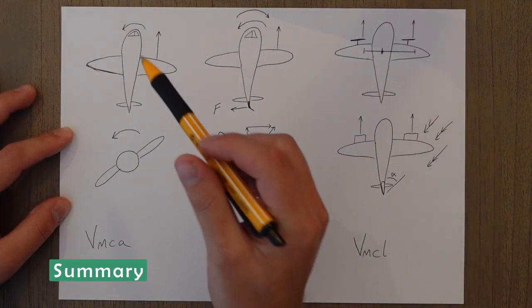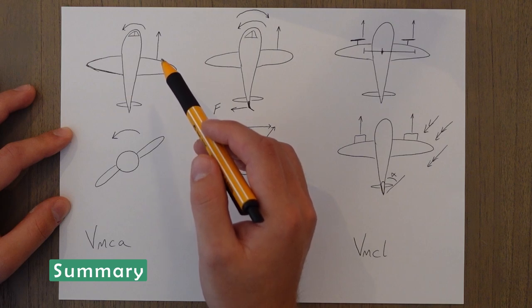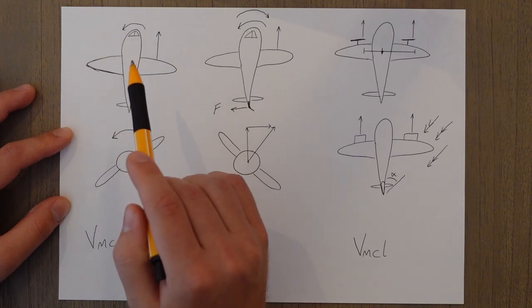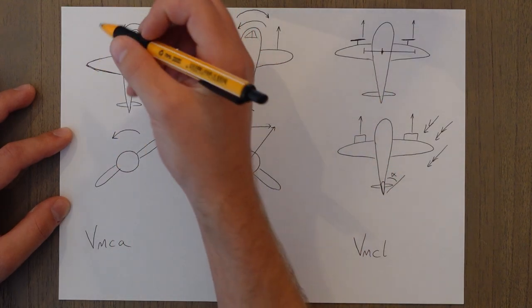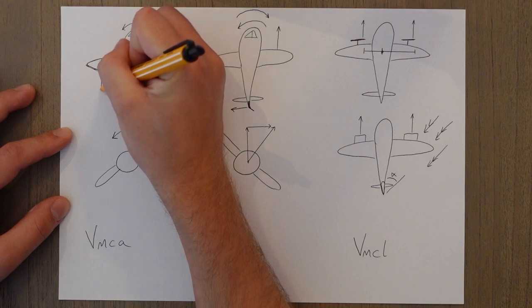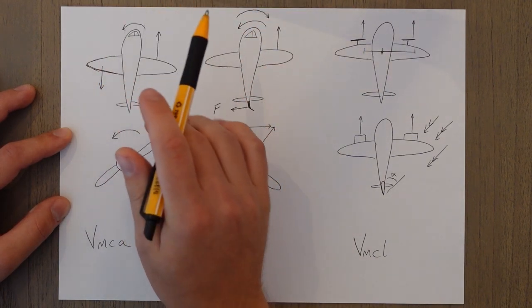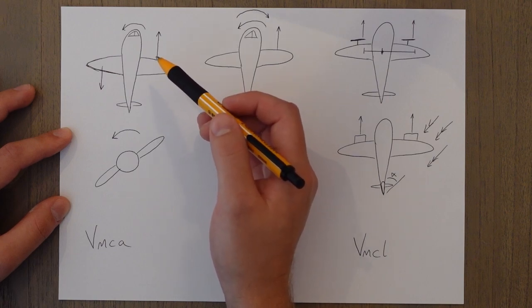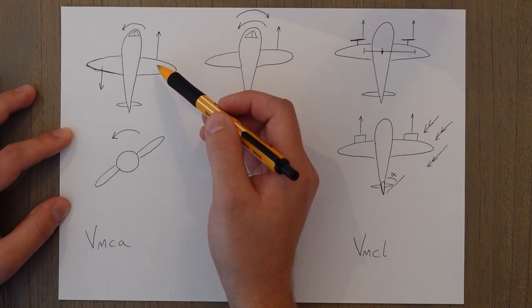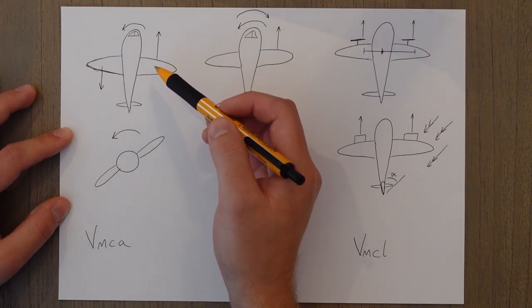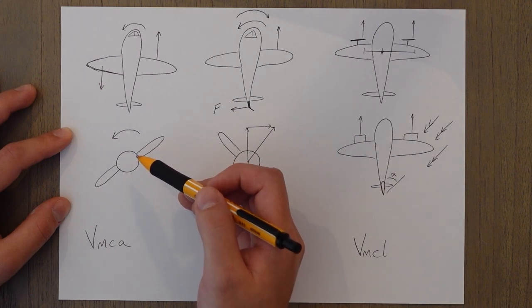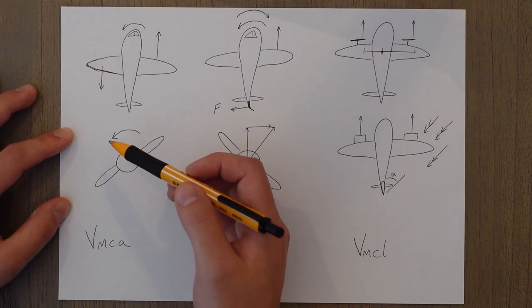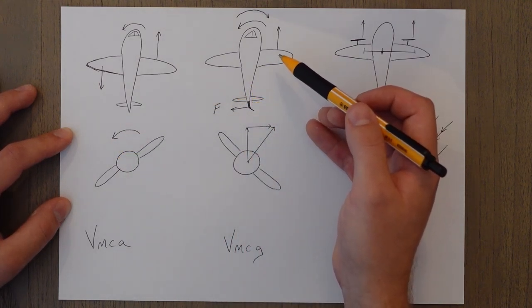To summarize then, if we have one engine fail and we're flying asymmetrically, all the thrust is coming from one side and it causes the aircraft to yaw around the center of gravity. In a propeller driven aircraft, if you have a windmilling propeller, it adds to the drag and makes this problem worse. Because the wing on the same side as the live engine is traveling faster through the air, it produces more lift and that causes a banking motion, a roll towards the dead engine as well. To correct this, we use the rudder. We step on the live engine.